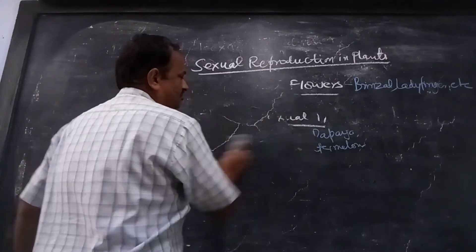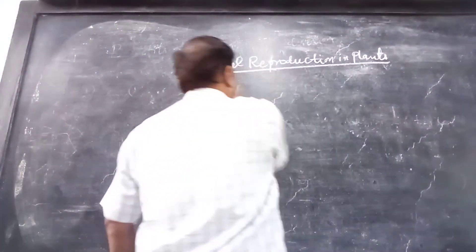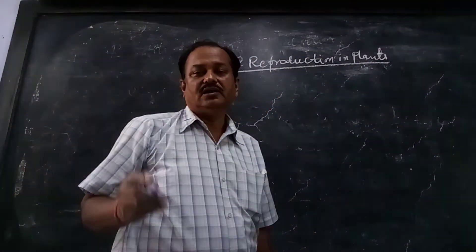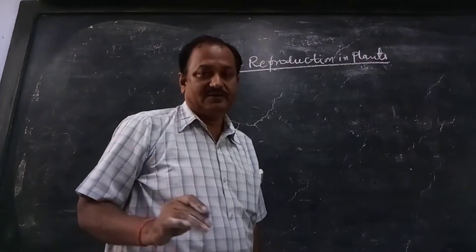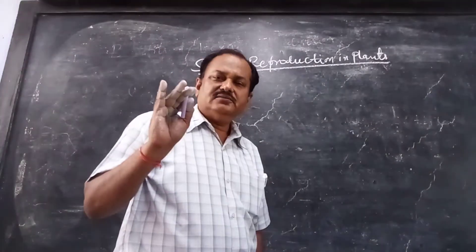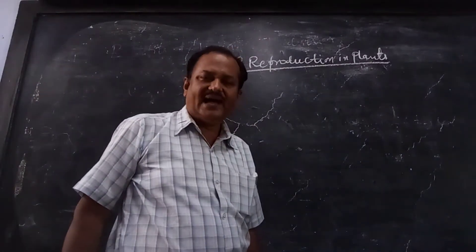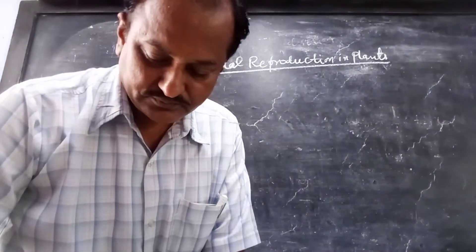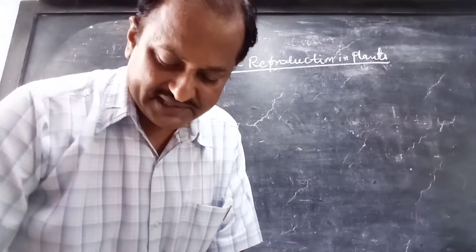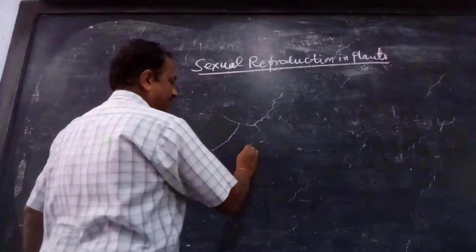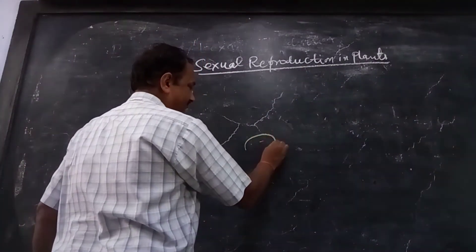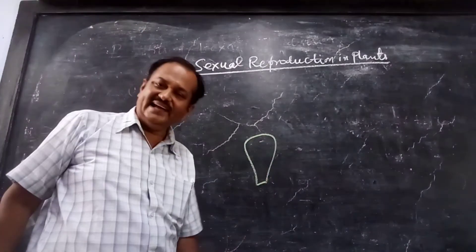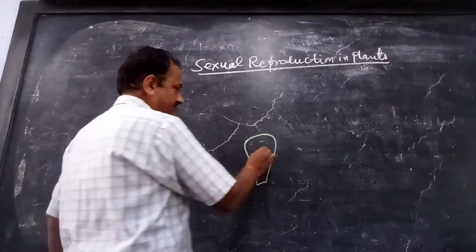Now I am going to explain the different parts of a typical flower. I am drawing a flower from a bisexual plant. This base part here is the thalamus.